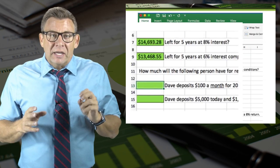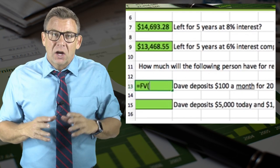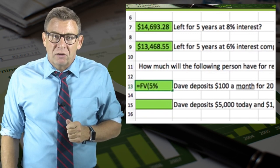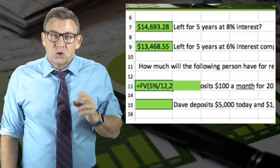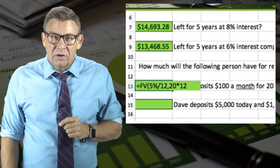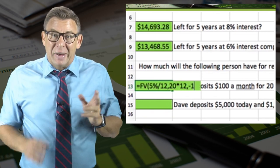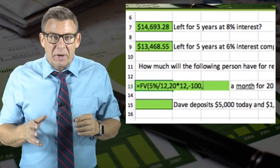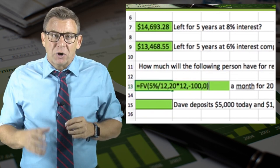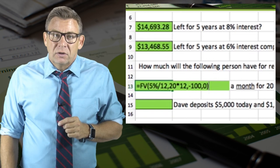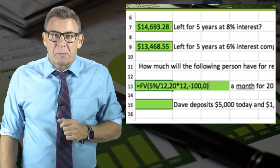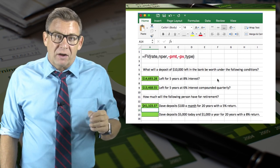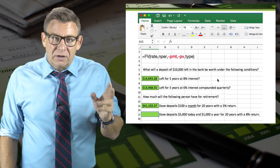I enter equals FV, open parentheses, 5% divided by 12, comma, 20 times 12, comma, minus 100 for the payment, comma, and 0 for present value since there was no initial one-time amount. This results in a future value of $41,103.37.